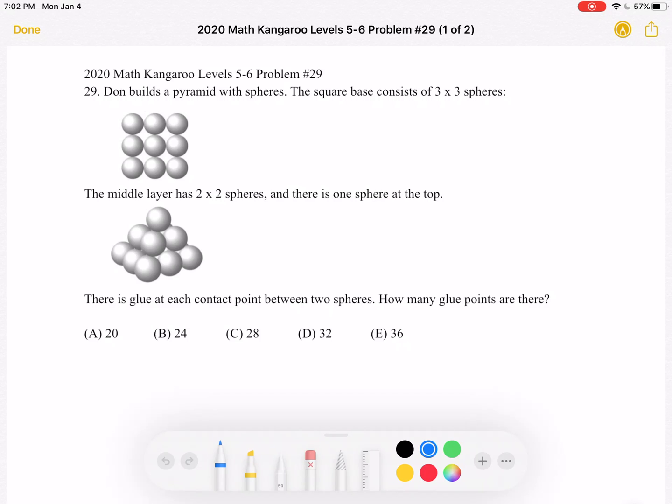Don builds a pyramid with spheres. The square base consists of 3x3 spheres. The middle layer has 2x2 spheres, and there is one sphere at the top.